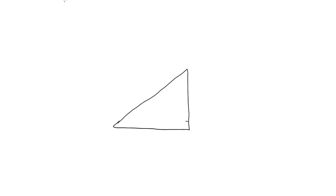The Pythagorean Theorem says that the square of the hypotenuse of a right triangle is equal to the sum of the squares of the other two sides of that triangle. If we take a right triangle and label this side a, this one b, and the hypotenuse c, then we take the length of side a, square it, add it to the length of side b squared, and that will equal the length of c squared. You get the old formula you're probably familiar with from high school: a squared plus b squared equals c squared.